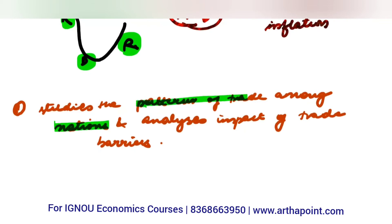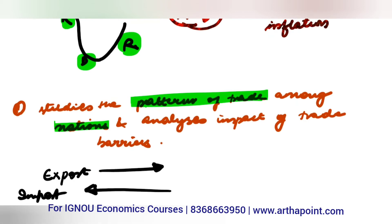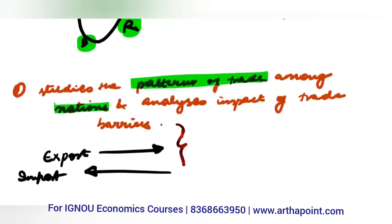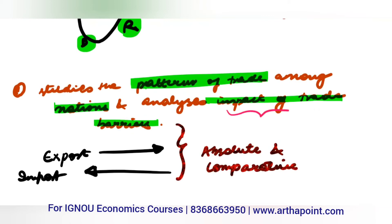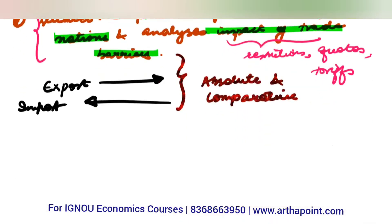Which nation is exporting and importing what? What will you export, what will you buy from outside? What theories apply here - what is absolute and comparative advantage? When will you export and when import? What is the role of trade barriers - what happens if we impose restrictions, import quotas, or tariffs? How will these affect trade? That is also part of economics.